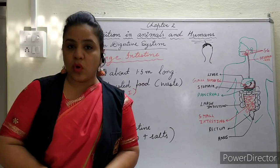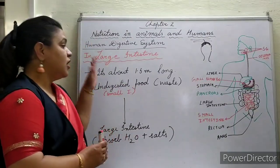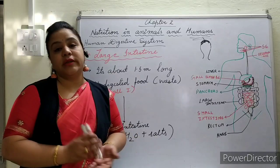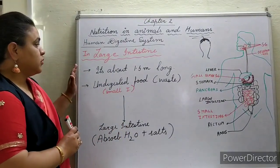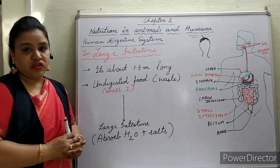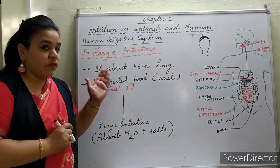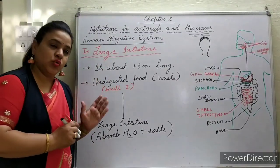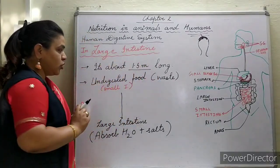After the small intestine, the next digestive organ is the large intestine. The large intestine is about 1.5 meters long. Recall that the small intestine was around 7.5 meters long — so the large intestine, at about 1.5 meters, is considerably shorter.